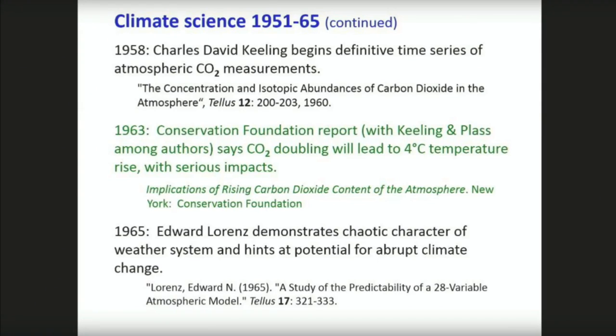In 1963, there was a report from the Conservation Foundation, with Keeling and Plass among the authors, that said — mirroring Arrhenius from long before — that CO2 doubling would lead to a 4 degree C temperature rise with serious impacts on the biosphere and on humans. In 1965, Ed Lorentz demonstrated the chaotic character of the weather system and hinted at the potential for abrupt climate change. And then came the 1965 PSAC report to President Johnson, which is the focus of today's meeting. PSAC was chaired by Lyndon Johnson's Science Advisor Don Hornig.